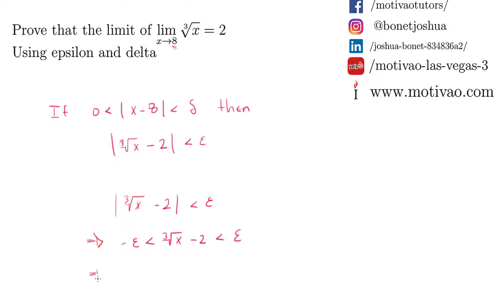This means, remember this is the theorem of absolute value, now we add 2 on both sides. So this is minus epsilon plus 2 less than the cube root of x less than epsilon plus 2. Notice that I added 2 on each side of the inequality.